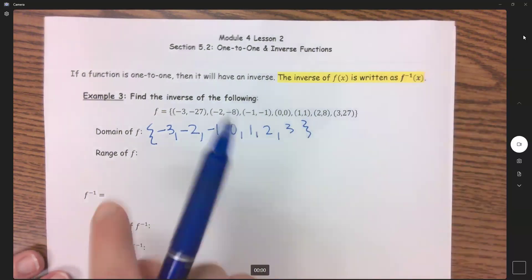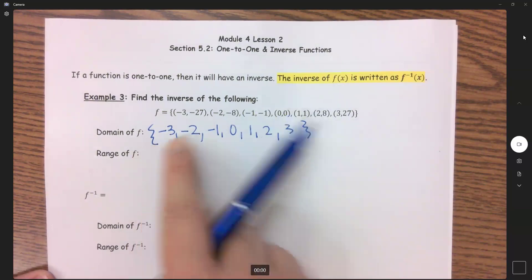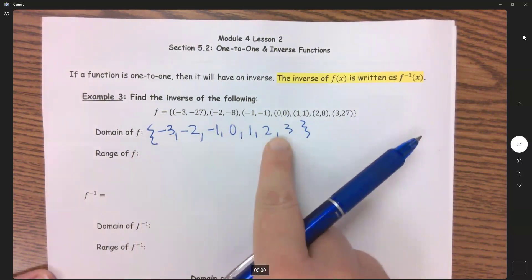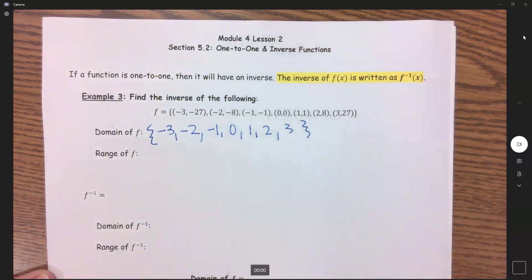So if you put like bracket negative 3 to 3, then you're talking about 2.2, 2.3, 2.4, and so on. So we have to list these out individually.